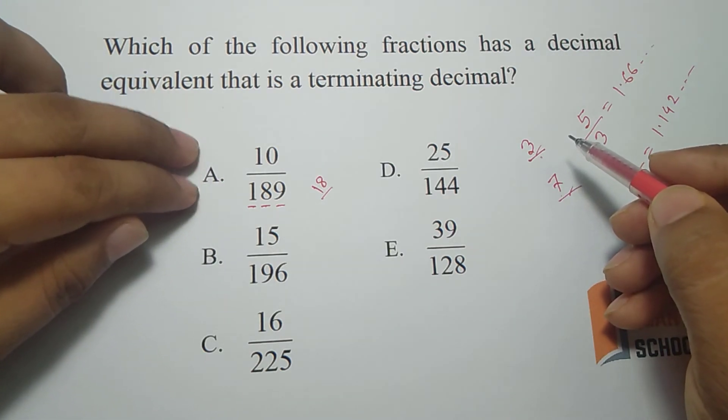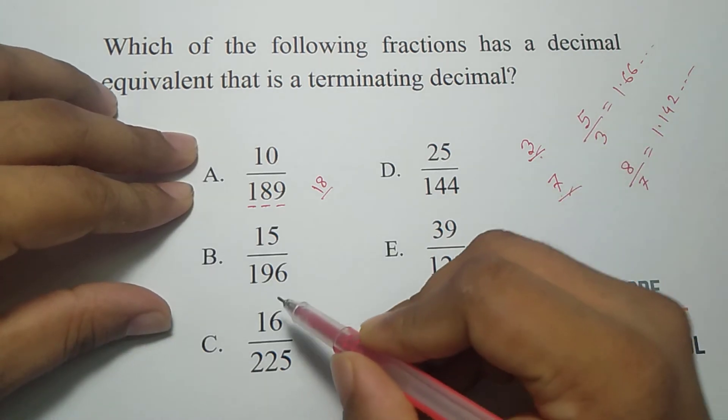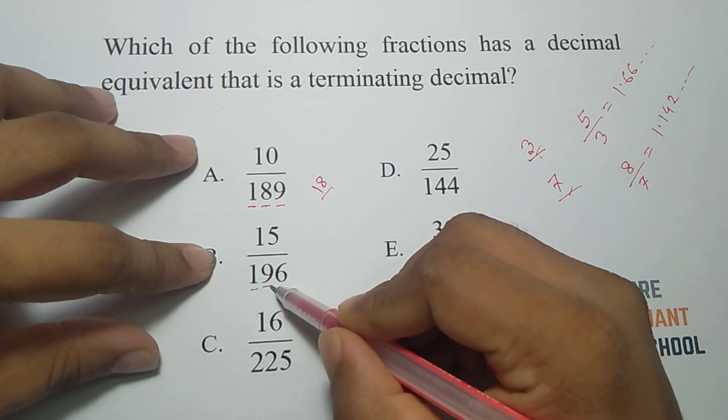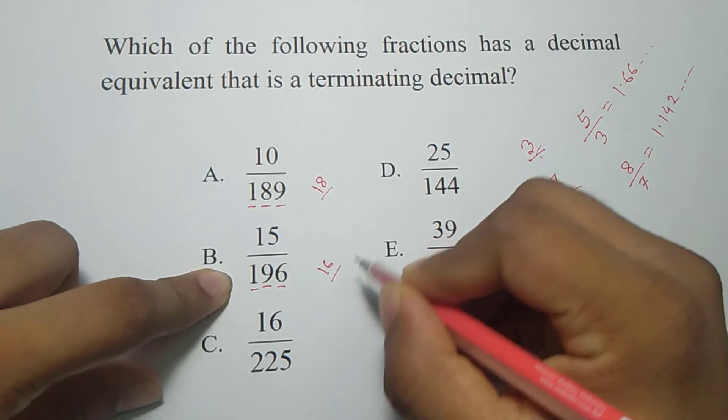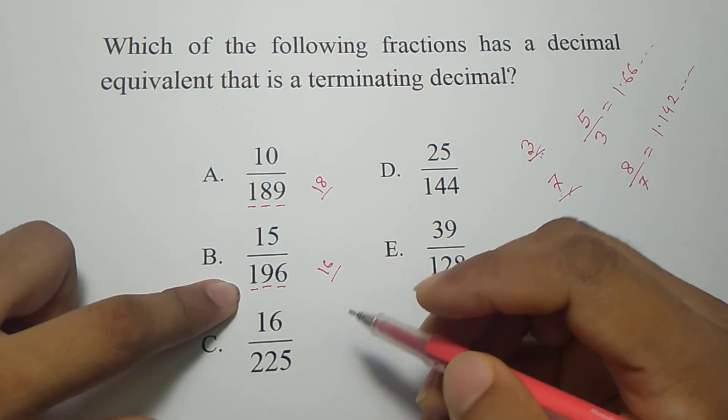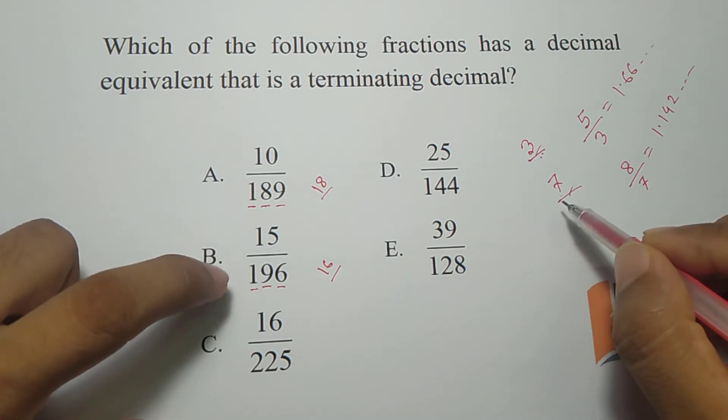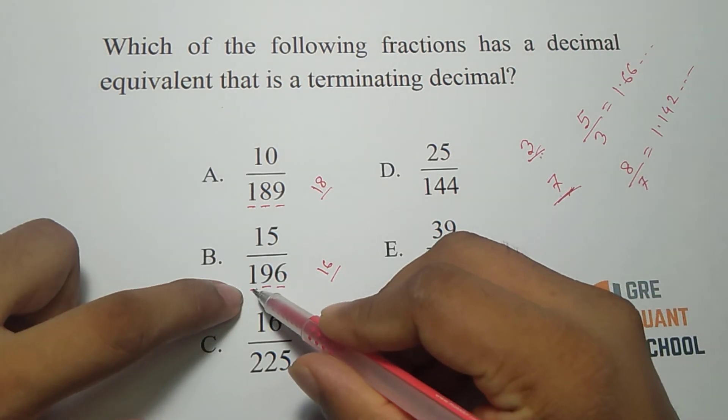Then 196, 1 plus 9, 10, 6, 16, it's not divisible by 3. So there is no 3, then we can check is the number divisible by 7 or not. So I can divide.